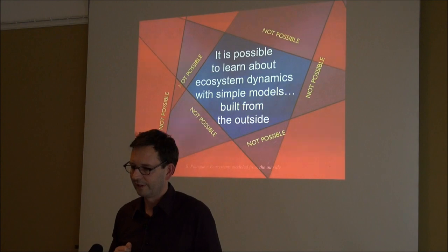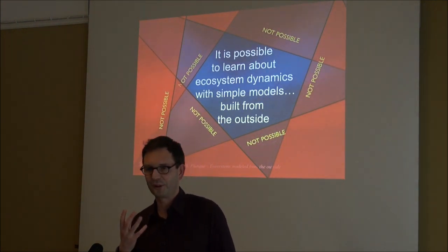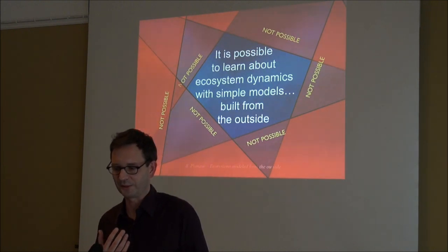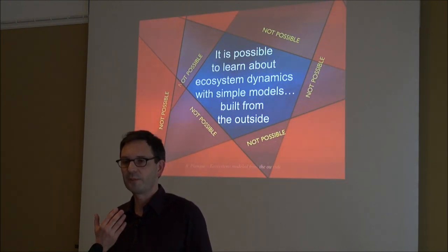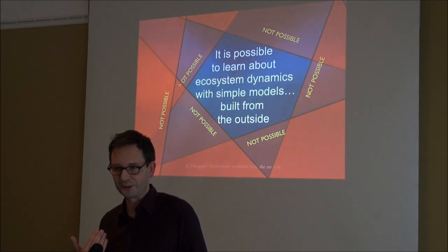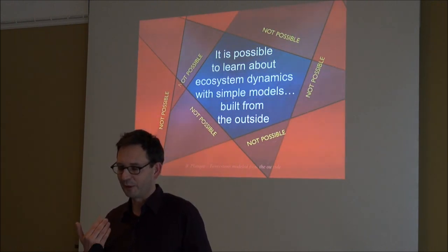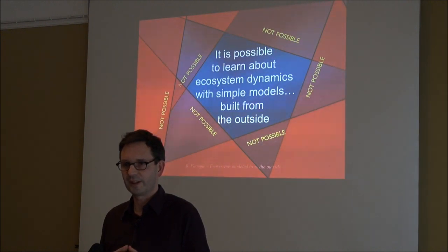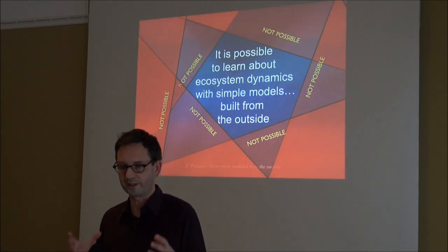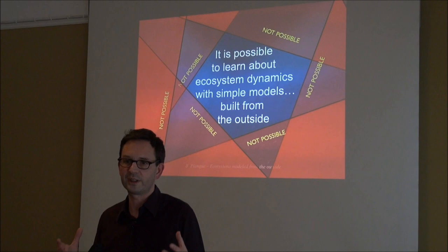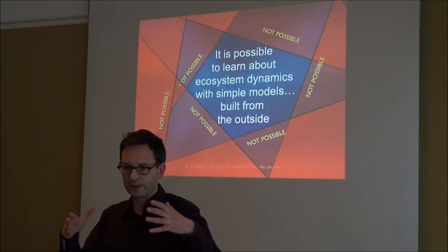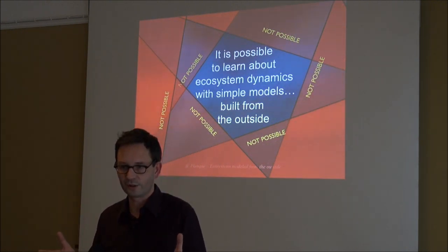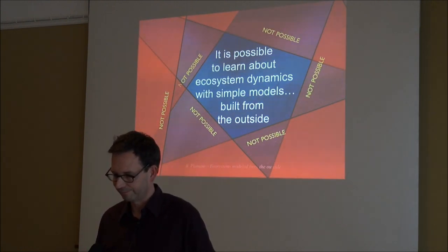To conclude: it is possible to learn something about ecosystem dynamics with simple models — not the regression model I showed at the beginning, but models built from the outside. This is a different approach to what is conventionally done, but it's an opening in science for addressing the problem of modeling complex systems with simple models, without losing the essential ingredients described by Holling as fundamental to the structure of the system.